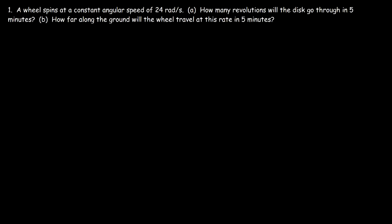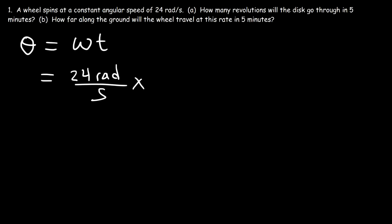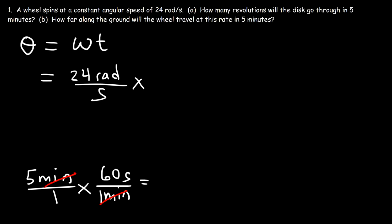Let's start with problem one. A wheel spins at a constant angular speed of 24 radians per second. How many revolutions will the disk go through in five minutes? There's no acceleration, so the main equation we need is theta equals omega times t. Omega is 24 radians per second, and we need to convert 5 minutes to seconds: 5 times 60 equals 300 seconds. Multiplying 24 by 300 gives us an angular distance of 7,200 radians.